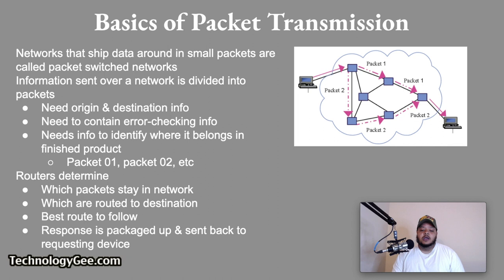When information is sent over a network connection, the information is divided into packets. Assume that a file could be divided into 100 packets. All packets need to contain the origin and destination information to prevent corruption, and error checking information. Each packet needs to identify where it belongs in the finished product — packet 01, packet 02, etc. As the packet flows through the network, devices known as routers determine which packets stay in the network, which ones are routed to their destination, and the best route to follow.